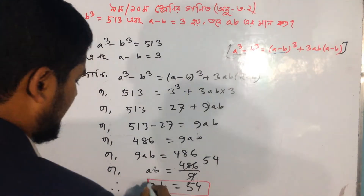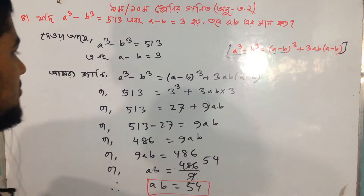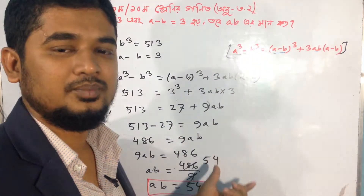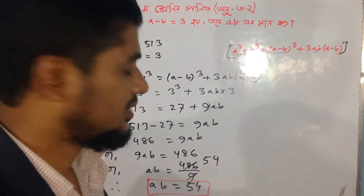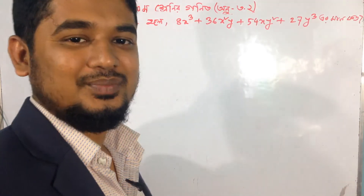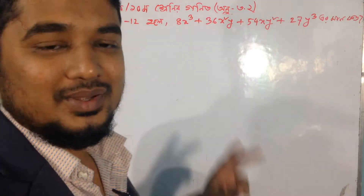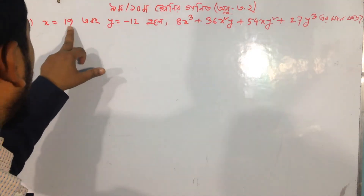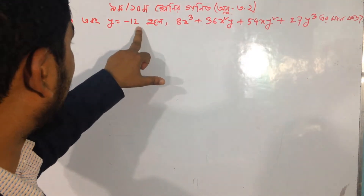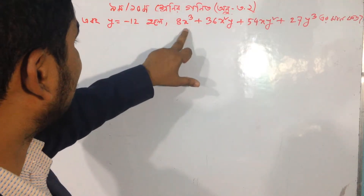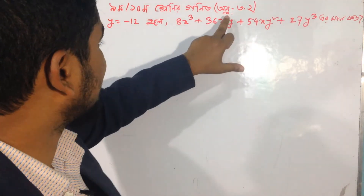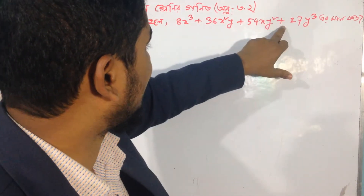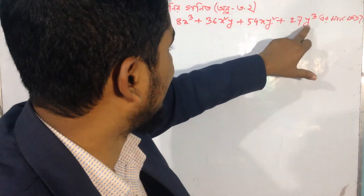So x is equal to 19, y is equal to minus 12. Therefore: 8x³ + 36x²y + 54xy² + 27y³.